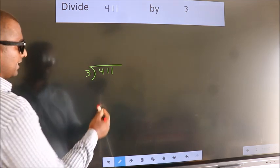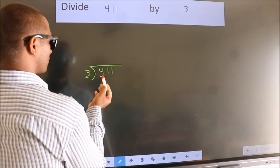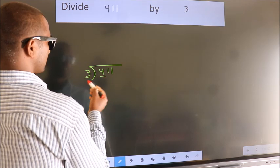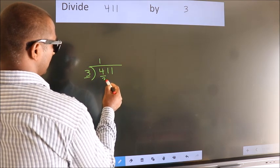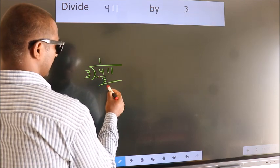Next, here we have 4, here 3. A number close to 4 in 3 table is 3 ones 3. Now, we should subtract. We get 1.